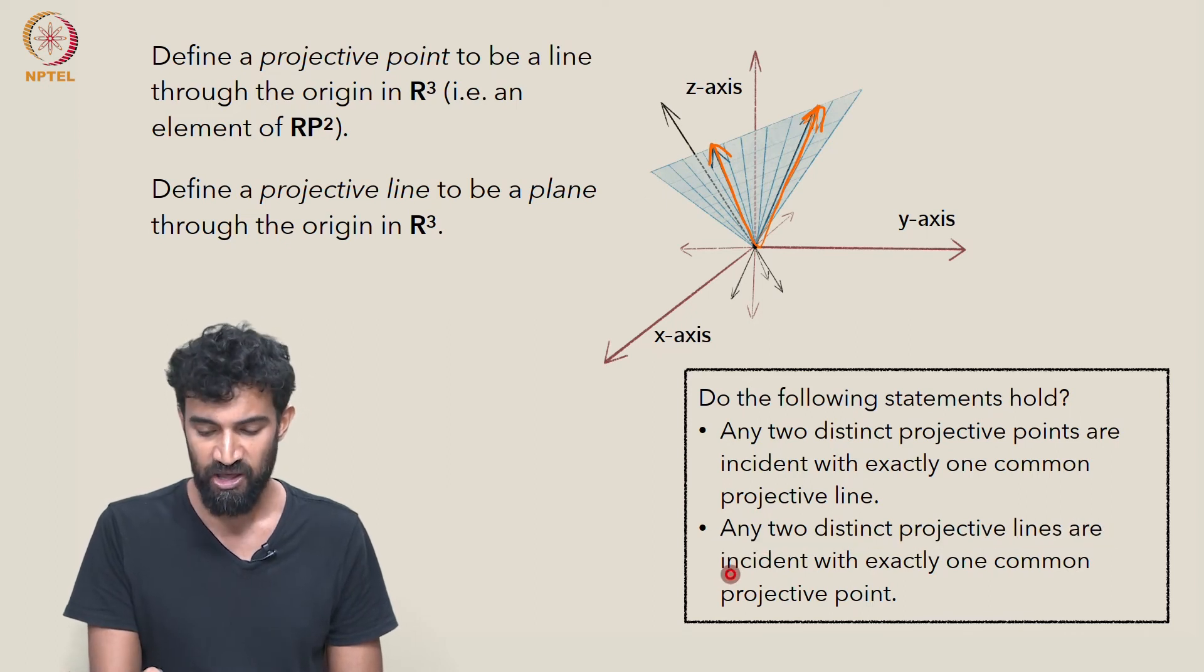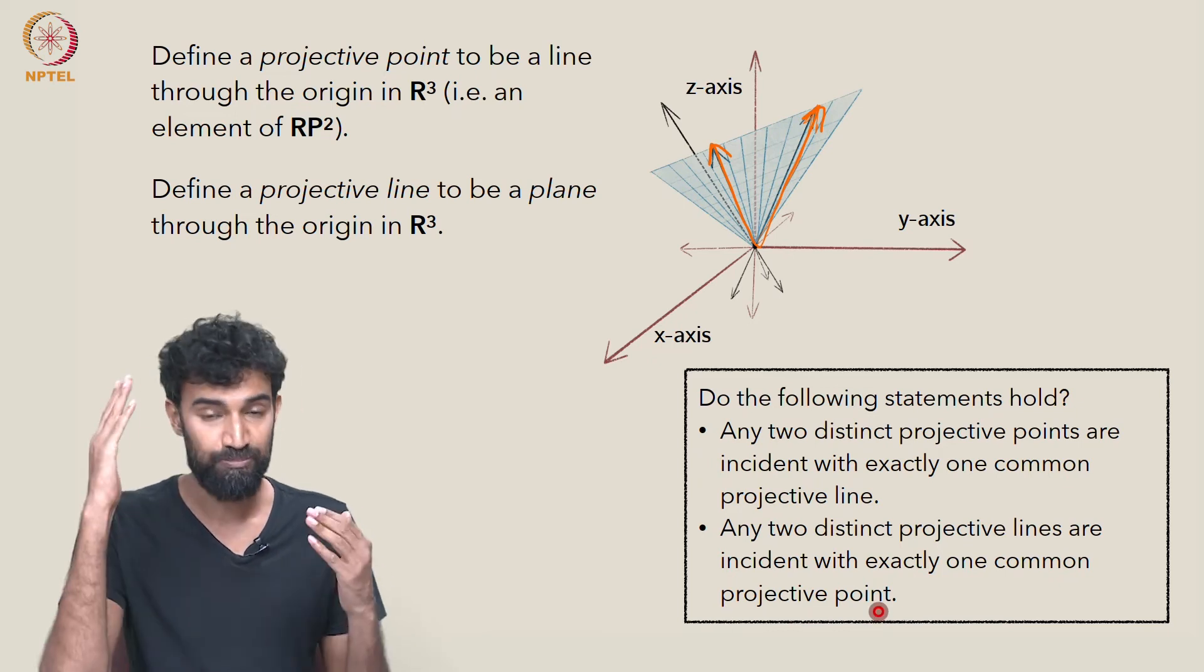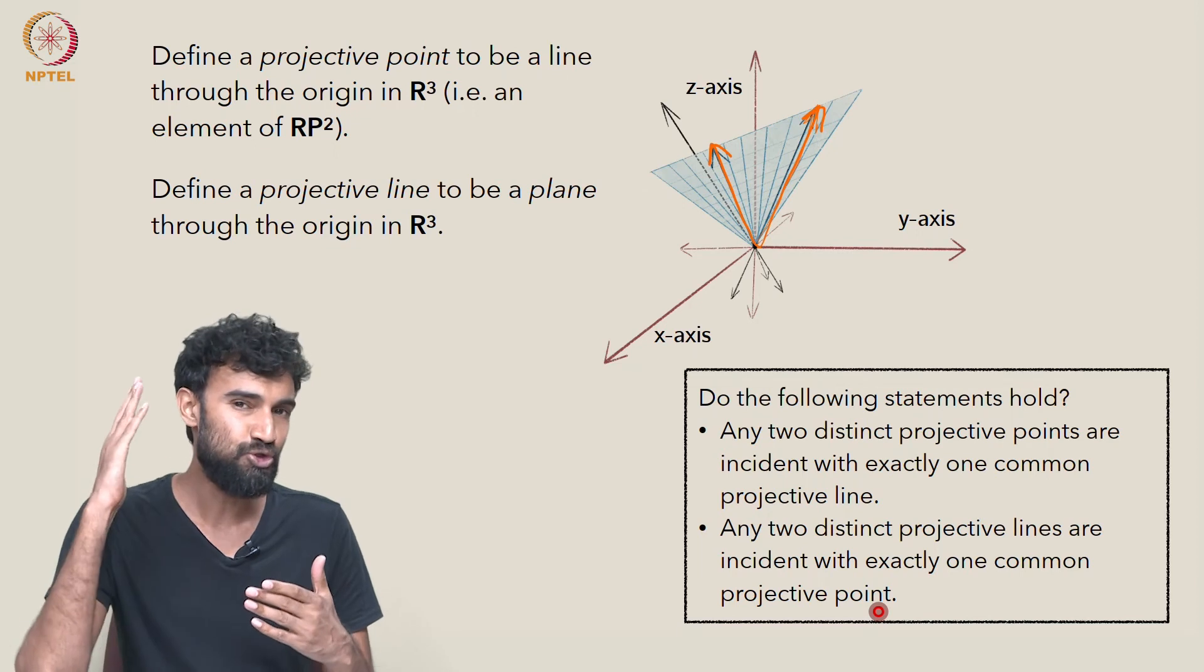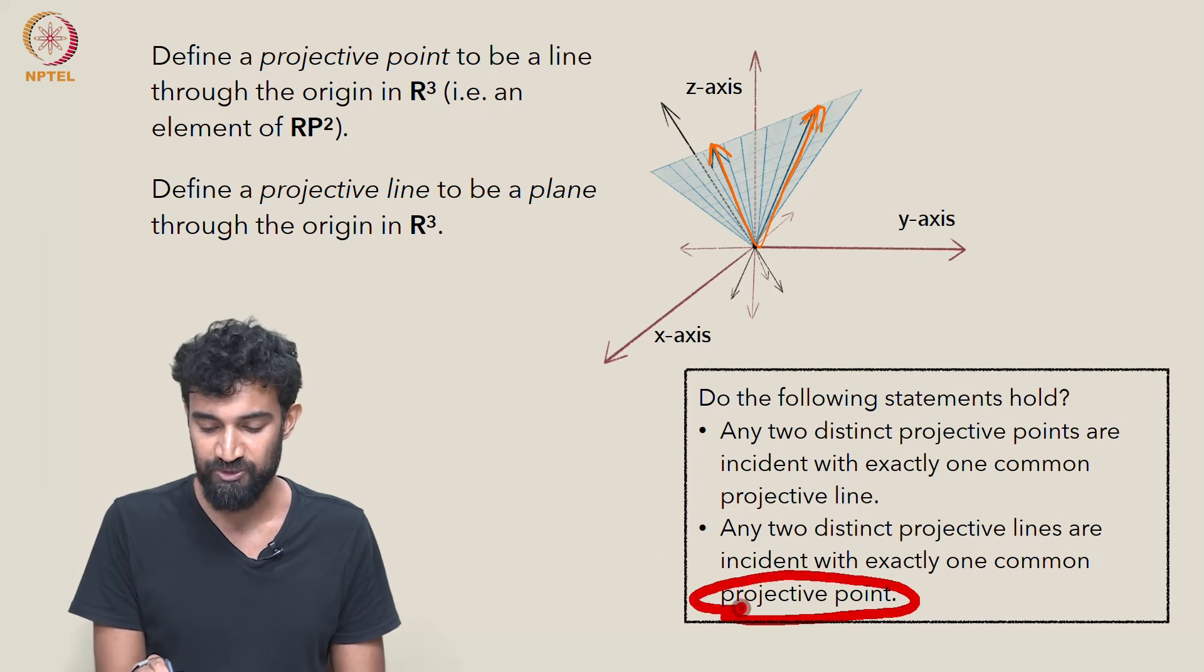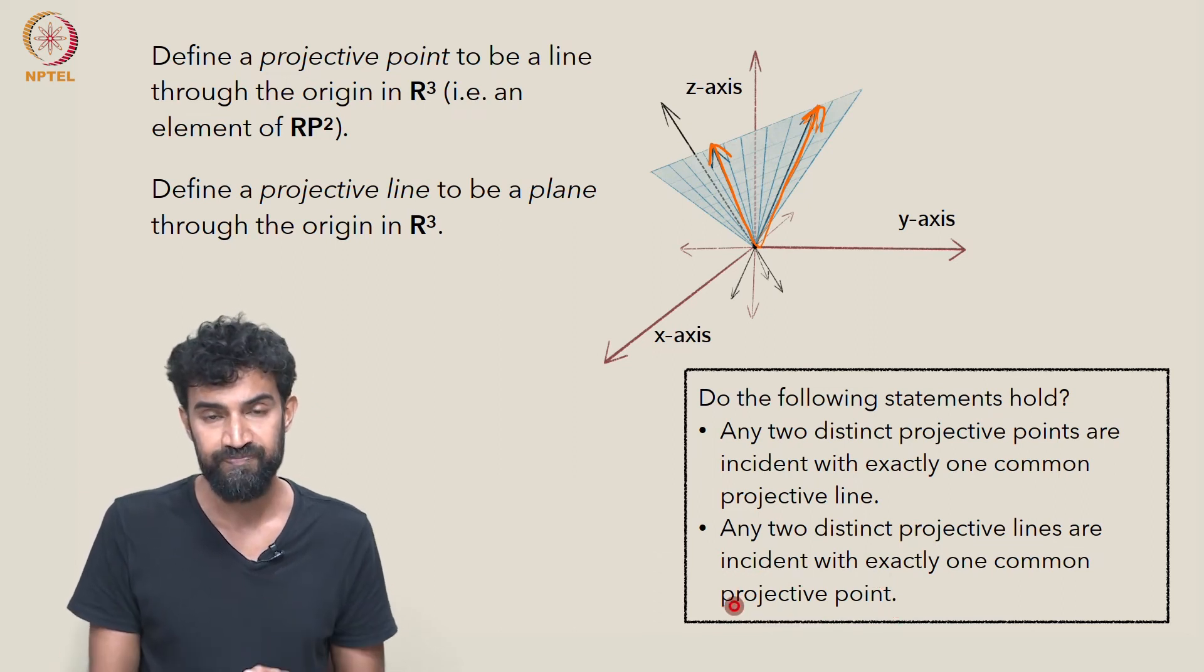And what about the second statement? Any two distinct projective lines are incident with exactly one common projective point. So projective lines are planes through the origin. Any two planes through the origin, are they incident with exactly one common line through the origin? Projective point? Well, yeah.